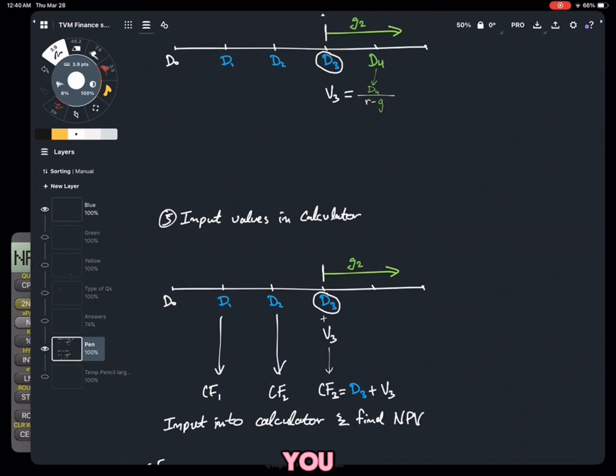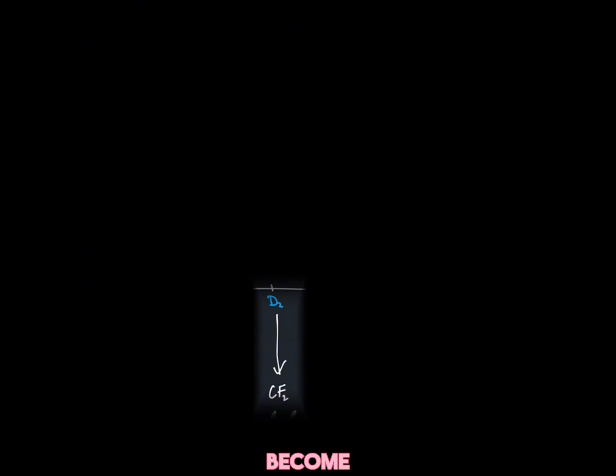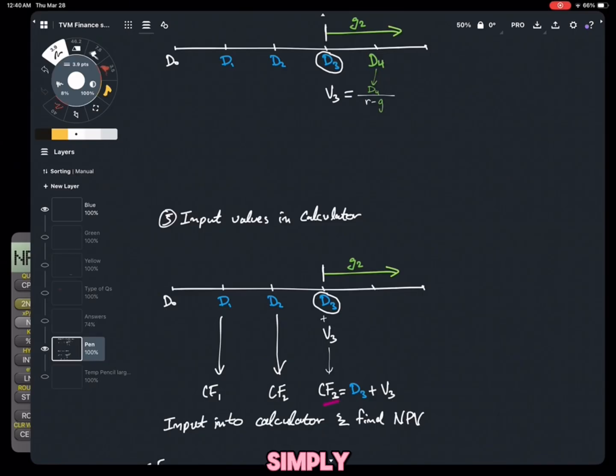This is where you prepare the values that are supposed to enter into the cash flow keys in your calculator. D1 simply becomes CF1, D2 becomes CF2. For CF3, you simply add up the values of D3 and V3.